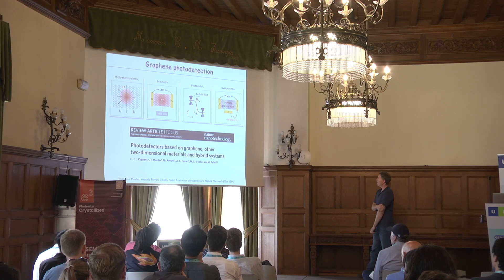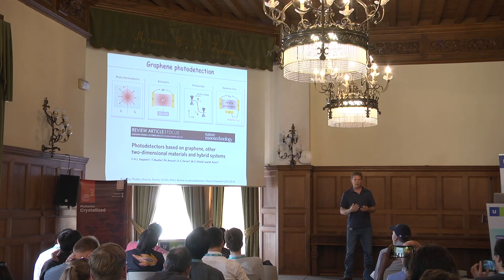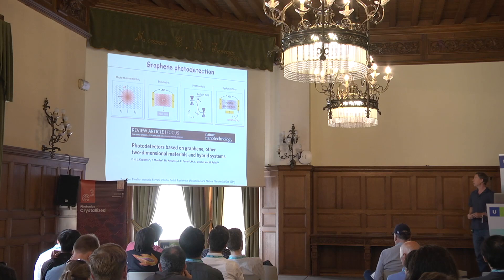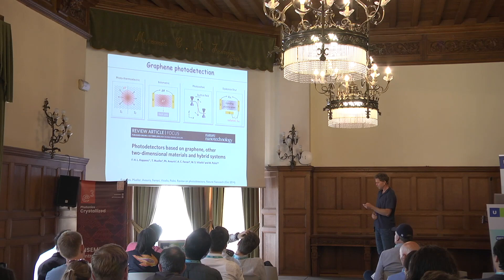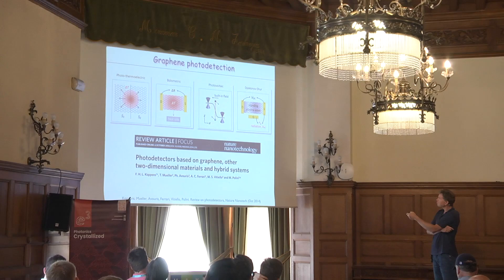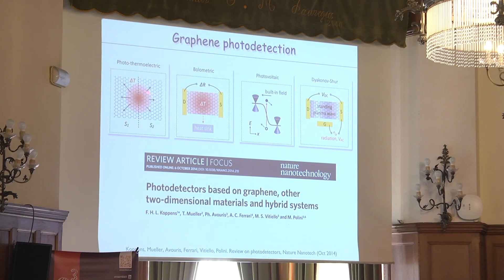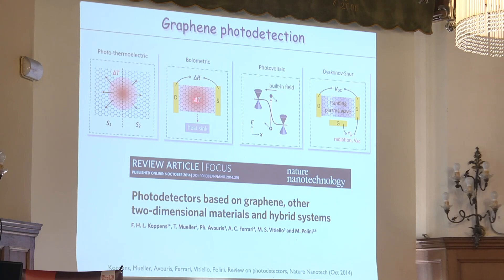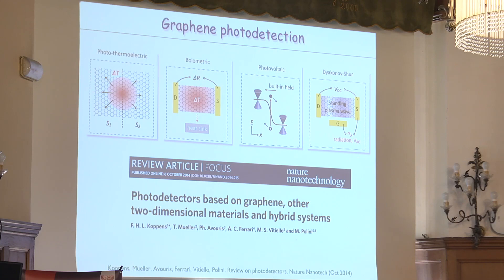I'm going to focus a bit on graphene because it's easier to explain the mechanism and it's well understood. In graphene, you have different photodetection mechanisms: the photothermoelectric effect where heat generates a voltage, bolometric effects where heat changes conductivity, photovoltaic effects where electron-hole pairs are separated like in semiconductors, and in terahertz also more exotic effects like the Dyakonov-Shur effect.